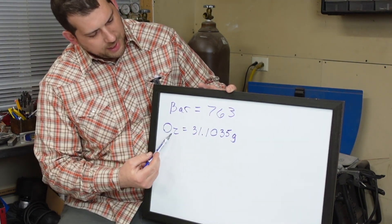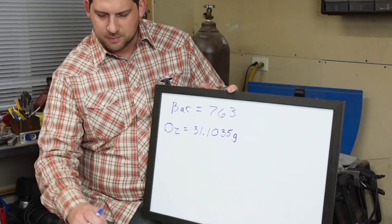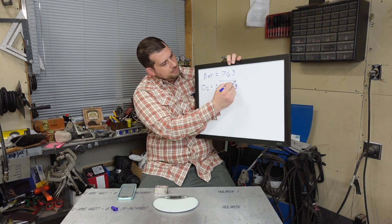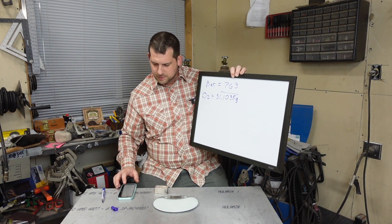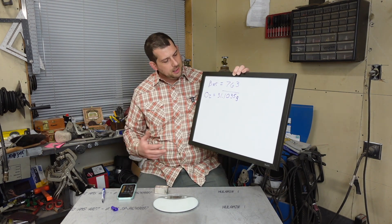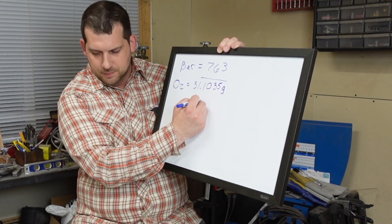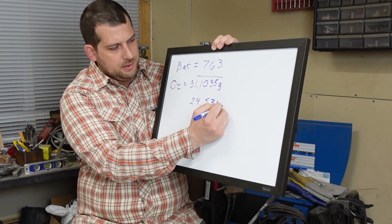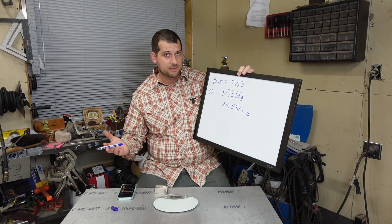And in a troy ounce there's 31.1035 grams, and this bar is marked 24.5 ounces, so just going to divide that by that and we should get about 24.5. So let's see what we get. So we divide that and we come up with 24.531 ounces, so it weighs a little bit heavy.